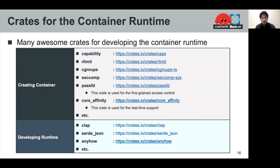Here I'd like to share the crates for developing the container runtime. Rust already has useful crates for creating containers such as the capability crate, cgroup, seccomp, and things like that. Passfd crate is used for the fine-grained access control of SL runtime, and core-affinity is used for SL runtime's real-time support. We can also develop software easily using the serde_json crate, which deserializes JSON format into Rust data structures.